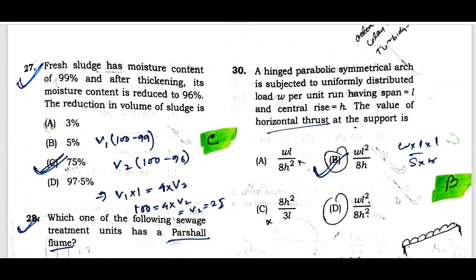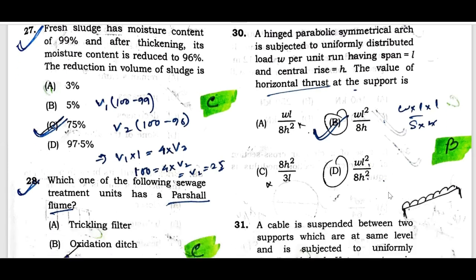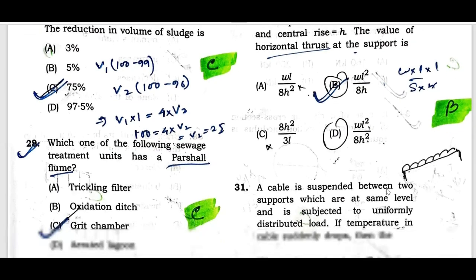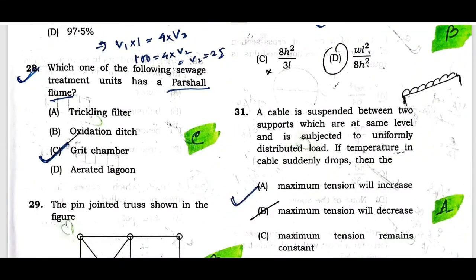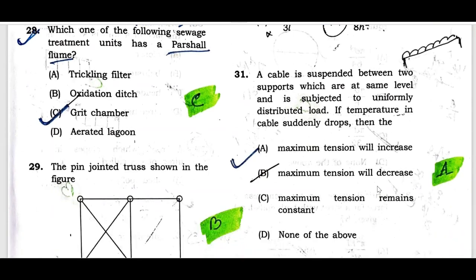Question number thirty: A two-hinged parabolic symmetrical arch is subjected to uniformly distributed load w per unit run, having span length L and center rise h. The value of horizontal thrust at the support is given by option B. Question number thirty-one: When a cable suspended between two supports at the same level under uniformly distributed load experiences a sudden temperature drop, the maximum tension will increase. Option A is the correct one.